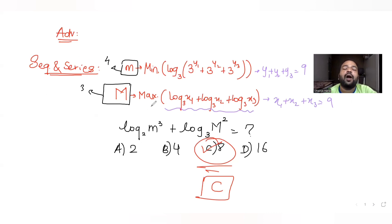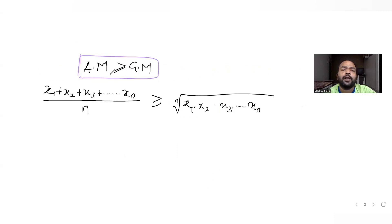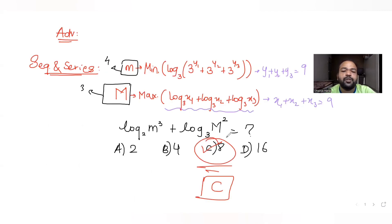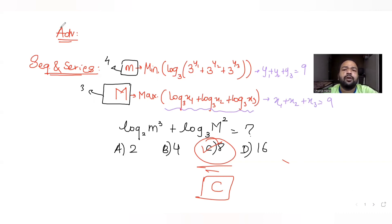I hope you understood how to solve this type of question dealing with the relation of arithmetic and geometric mean. We used AM ≥ GM to get small m = 4 and capital M = 3, then substituted into the expression to get 8. I'll see you tomorrow with another question. We are continuing our series on JEE Advanced till June 10th. Please like, share, and subscribe, and share with friends preparing for JEE Advanced. Thank you.